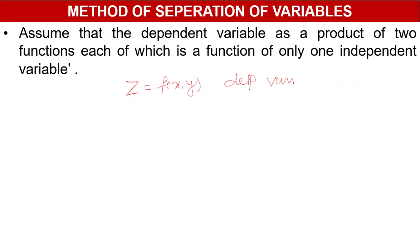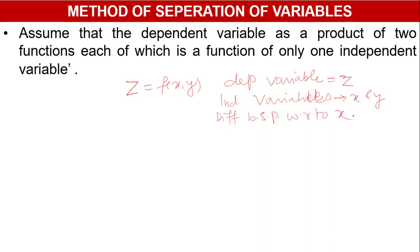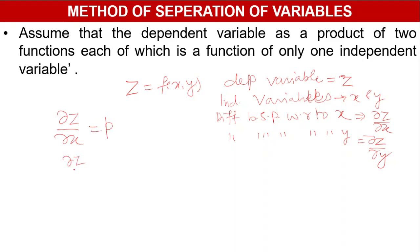Here z is the dependent variable and x and y are the independent variables. Differentiating both sides partially with respect to x gives del z/del x, and differentiating both sides partially with respect to y gives del z/del y. We know that del z/del x is denoted by p and del z/del y is denoted by q.